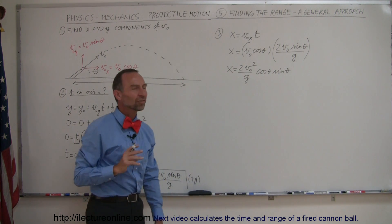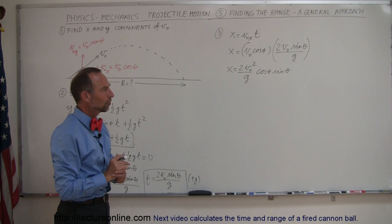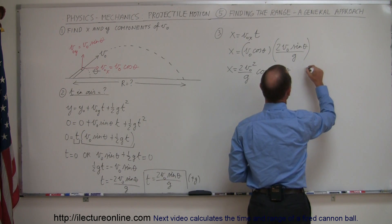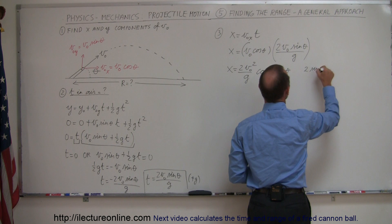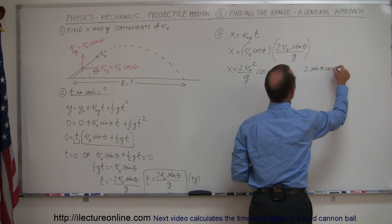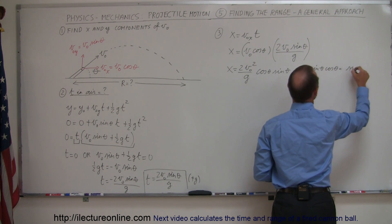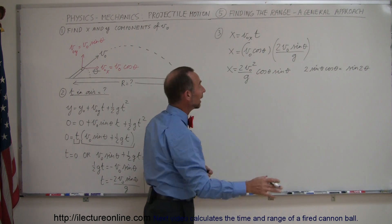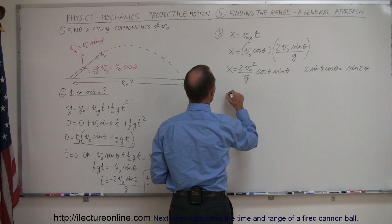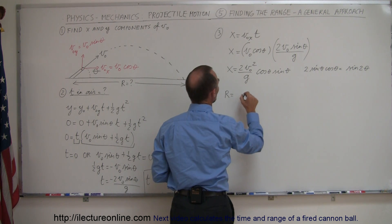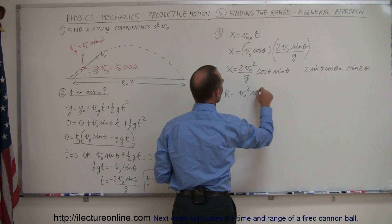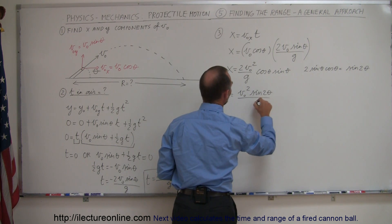We can actually simplify further because there's a trigonometric identity that says 2 times the sine of theta times the cosine of theta equals the sine of 2 theta. Using that identity and substituting, we get that x — the range R — equals v-sub-naught squared times the sine of 2 theta, all divided by g. That is the equation we can use to find the range of a projectile shot from the ground at any angle theta and any initial velocity v-sub-naught.